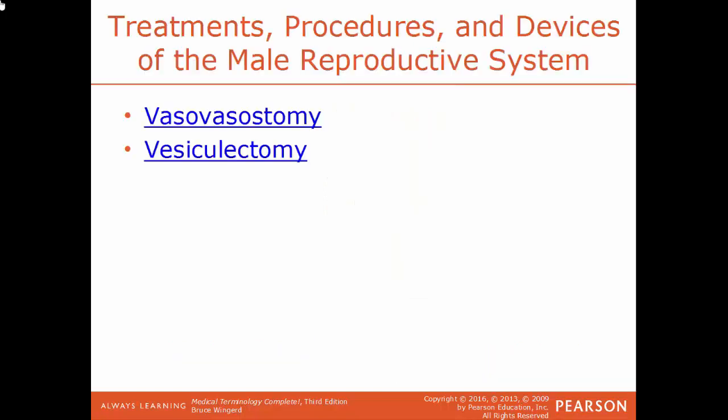Vasovasostomy is a procedure where a vasectomy is partially reversed. When you have a vasectomy, you can either cauterize both ends — a more permanent solution — or tie off the ends. If the male later wants the procedure reversed, you untie those ends and sew them back together. So it is possible to reverse a vasectomy if done that way. If the ends are cauterized, it can't be reversed. Vesiculectomy is the surgical removal of the seminal vesicles.